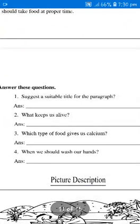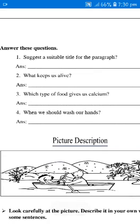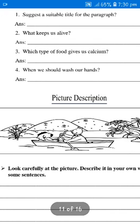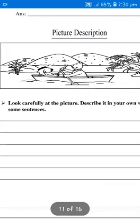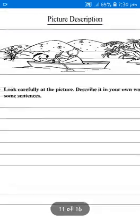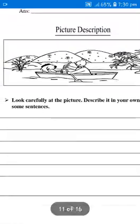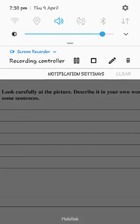Answer these questions. Number 1: Suggest a suitable title for the paragraph. Number 2: What keeps us alive? Number 3: Which type of food gives us calcium? Number 4: When should we wash our hands? Picture description: Look carefully at the picture. Describe it in your own words. Write some sentences. First of all, look at the picture carefully, then write some sentences about it.